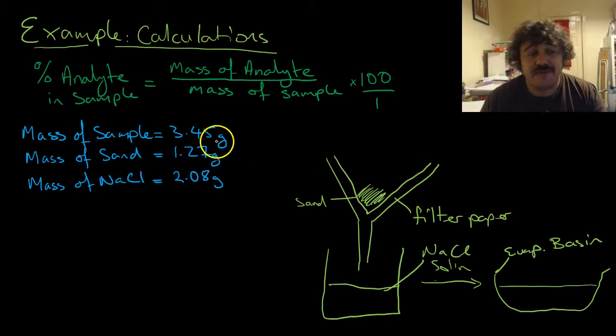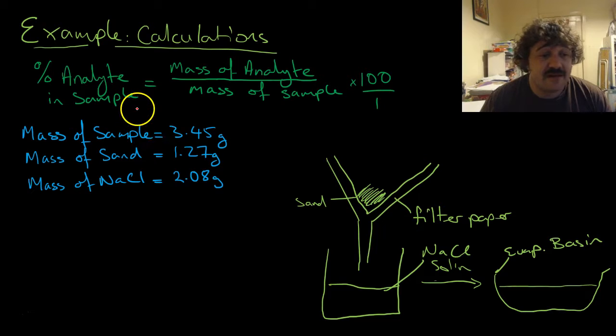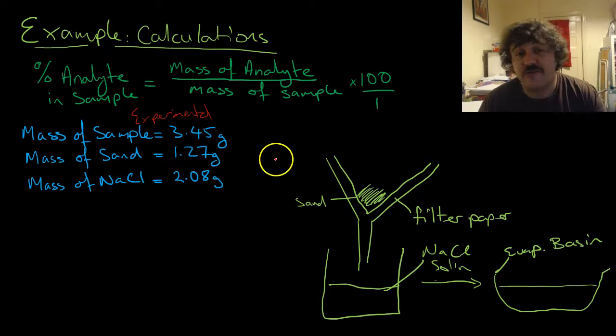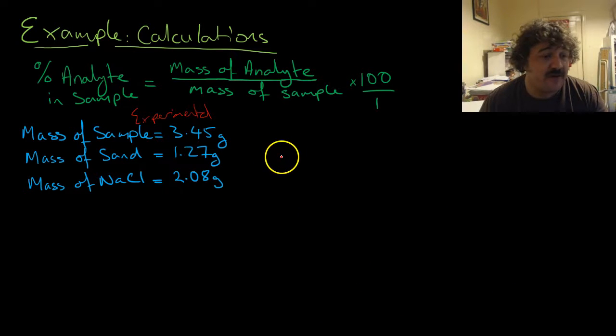The mass of sample is 3.45 grams. Remember, we use the metric system. The mass of sand is 1.27 grams, and the mass of sodium chloride - these are the weighed numbers, the experimental numbers - is 2.08 grams.